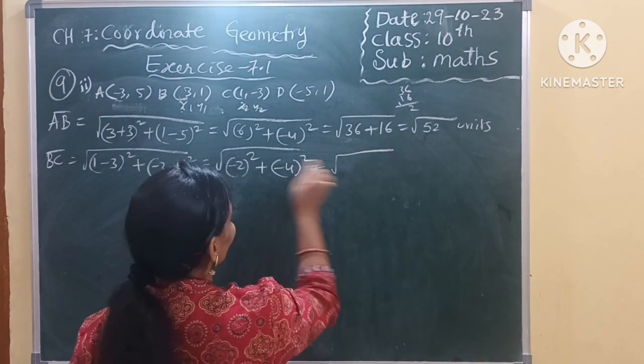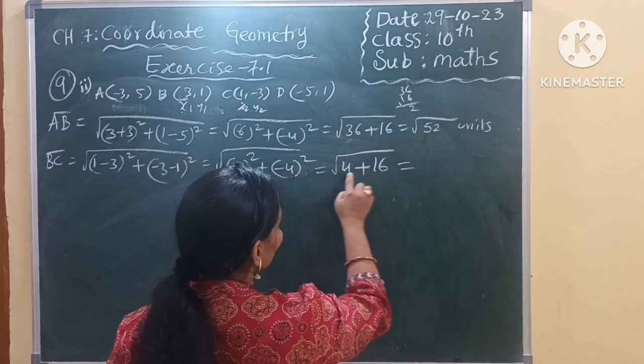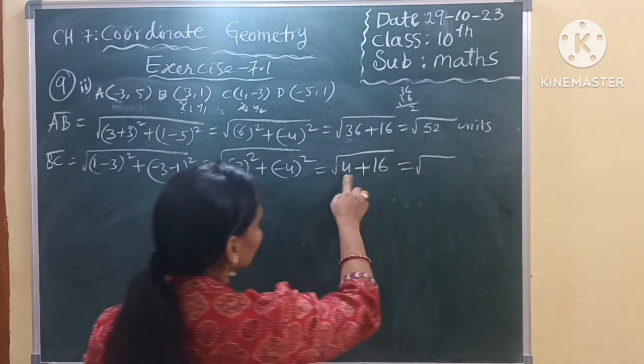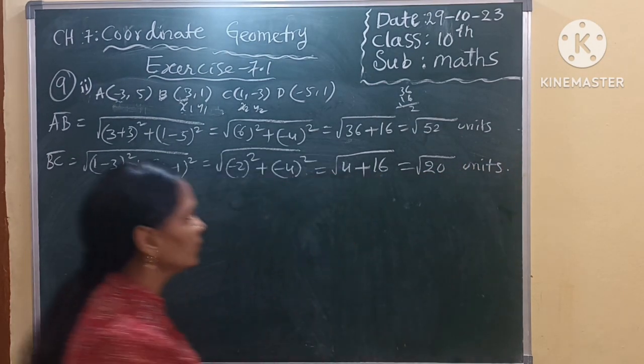Now square root of 2 square is 4, 4 square is 16. So here we got root 20 units.